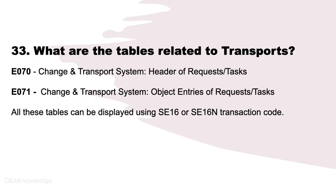What are the tables related to transports? Both the E070 and E071 tables are related to the Change and Transport System. E070 contains the header of requests and tasks. E071 contains the object entries of requests and tasks. All these tables can be displayed using SE16 or SE16N transaction codes.